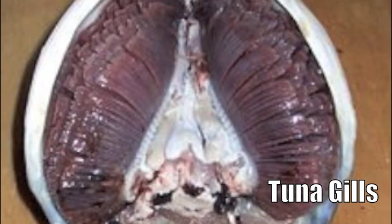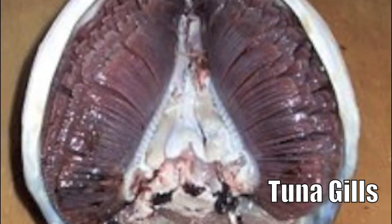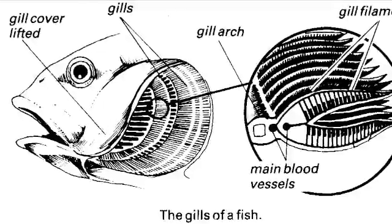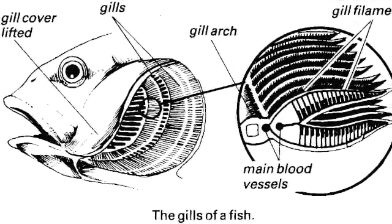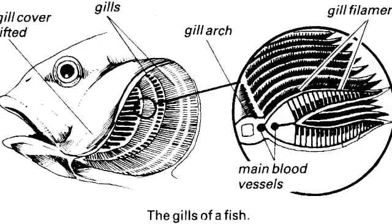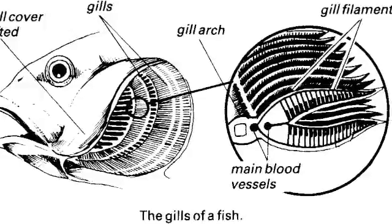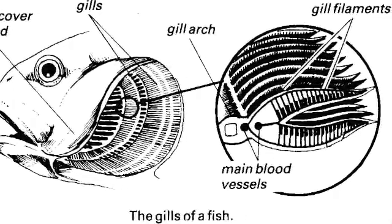Gills are perfect for fish because they have a large surface area to allow as much oxygen through the gills as possible. They have good blood supply to maintain the concentration gradient needed. A thin membrane to allow for short diffusion. Each gill arch has two rows of gill filaments and each filament has many lamellae.